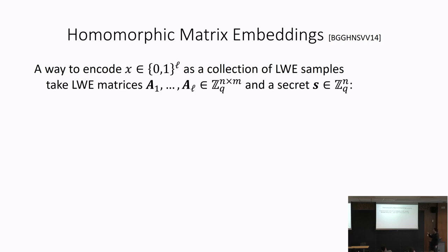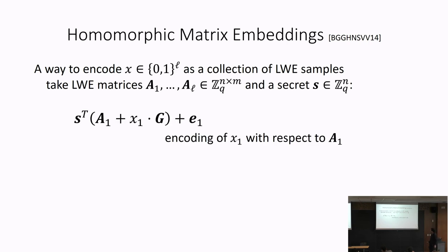The reason we need this encoding is that the LWR assumption only applies for a random choice of A, but x chosen by an adversary has no entropy. We need a way of deriving a matrix A that looks uniformly random — entropy comes from the additional random matrices A1 through A_L that are part of the public parameters.